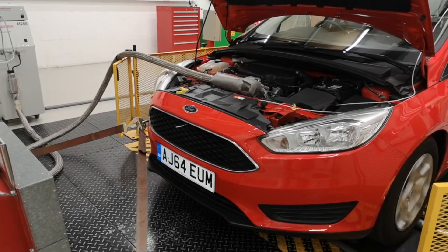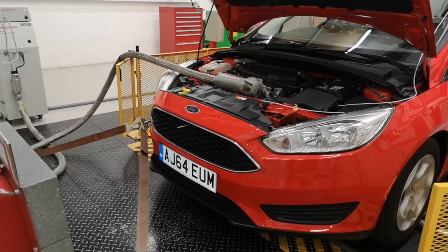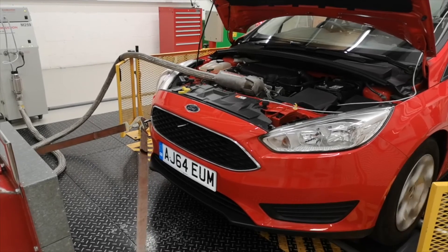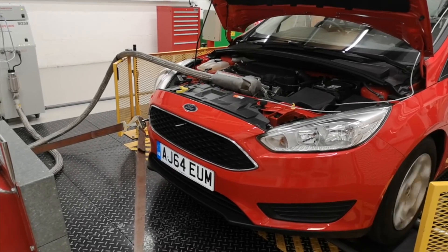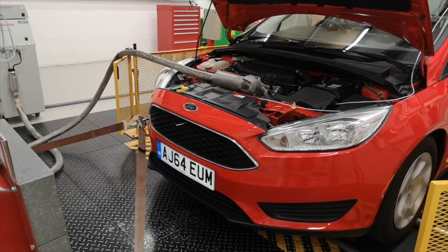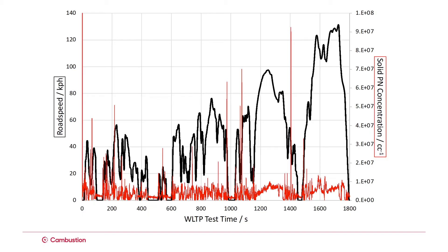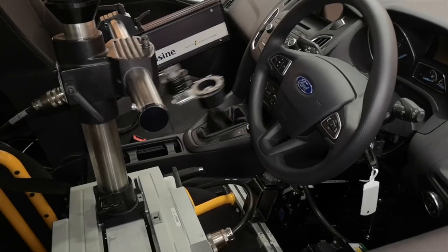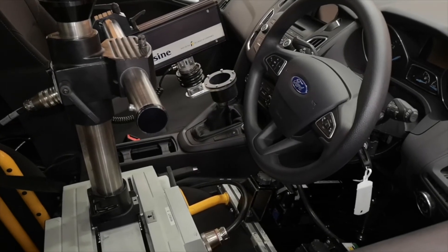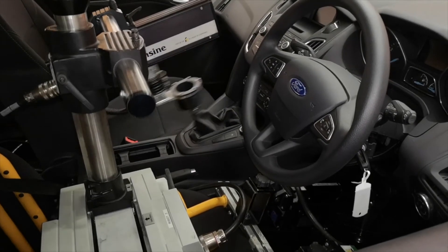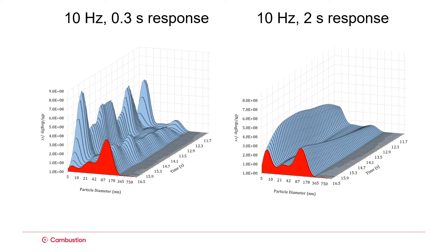The complete DMS 500 and CSA, including sample line, responds to engine transients within 300 milliseconds with 10Hz data. Modern drive cycles such as the WLTP are highly transient, therefore a fast response to change is vital — otherwise important features in the data can become smeared out and lost.